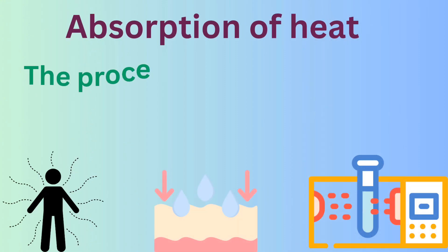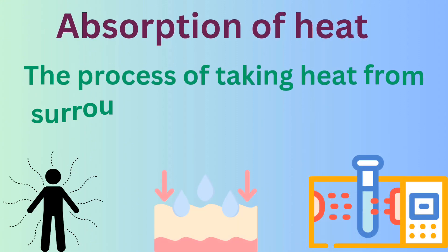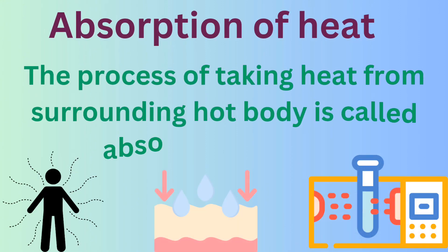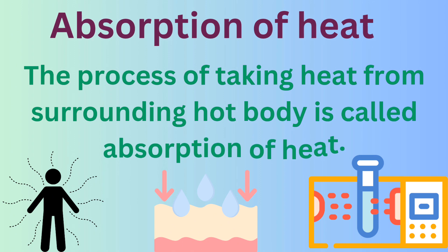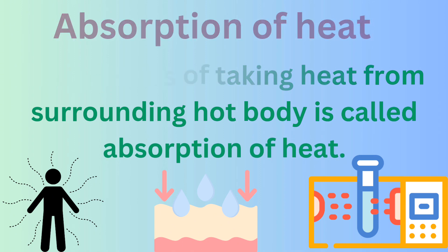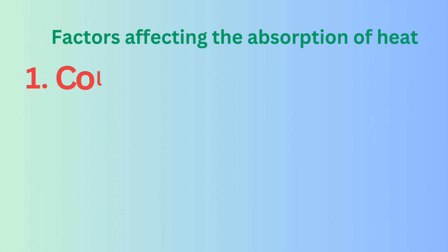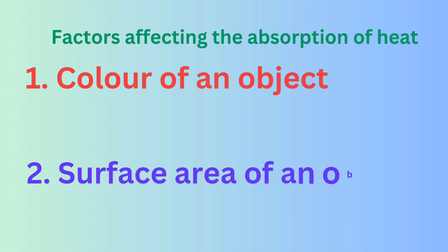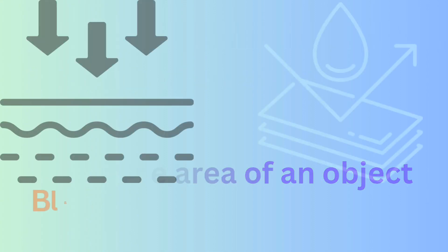The process of taking heat from the surrounding by a body is called absorption of heat. Mainly, the ability of heat absorption depends upon the surface area of the object and its color.